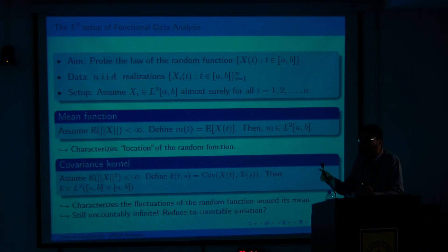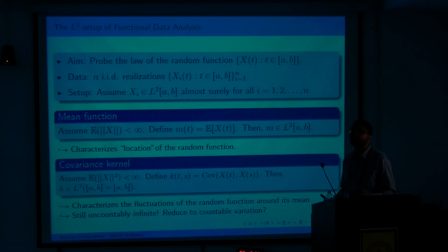The mean is defined as a very natural analog of the multivariate setting: we have a mean function m(t), where m(t) is the expected value of X(t). For each time point we get the expectation, defining a function m in L2([a,b]) — this characterizes the average location of the function. For variation, instead of a covariance matrix as in multivariate data, we have a covariance kernel K(t,s) — the covariance between X(t) and X(s) — which characterizes fluctuations of the random function around its mean.